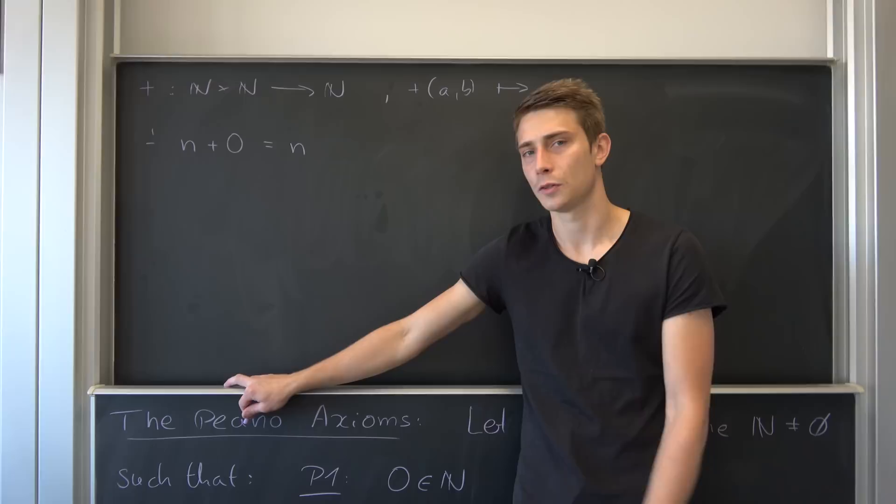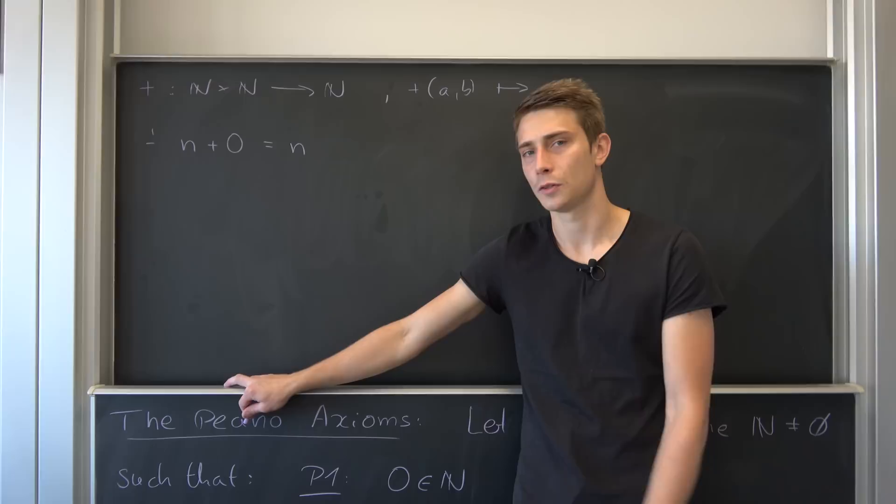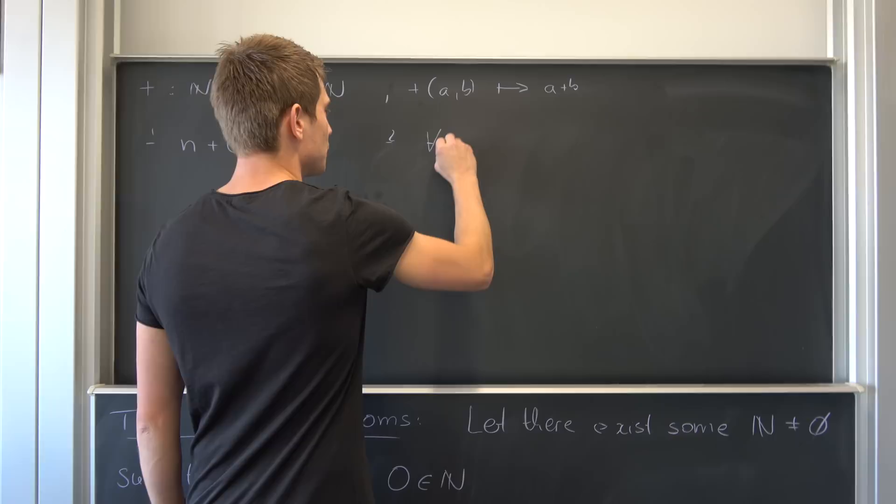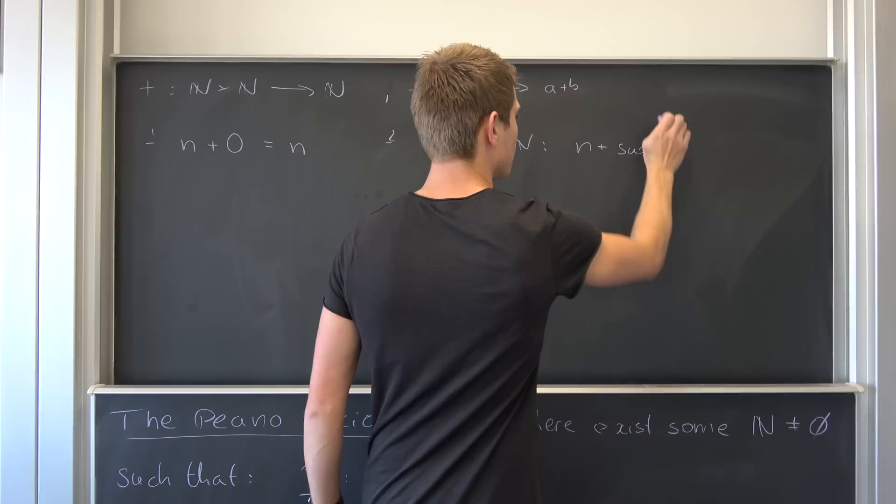So seven plus zero is just seven. Your dog plus zero is just your dog, if you include dog in the natural numbers. And that will be fucking sick. And there's also another rule which is quite important. Well, for all M and N element of natural numbers.